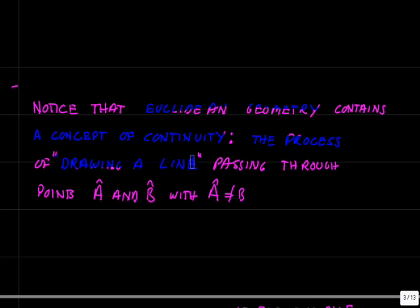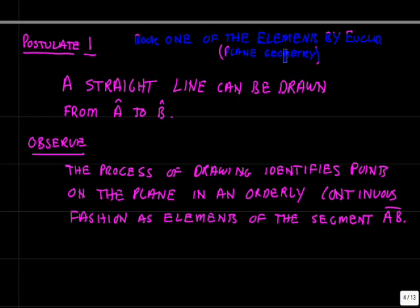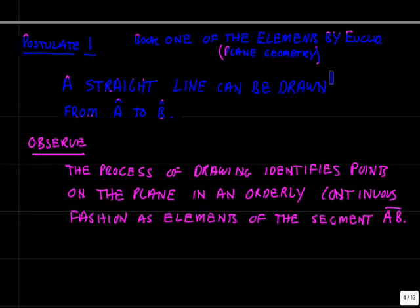The process of drawing a line, passing through two points A and B, two distinct points in the plane, contains the idea of continuity. Look at how this is formulated. In book one of the elements by Euclid, this is part of the treatment of plane geometry. Postulate one, book one, a straight line can be drawn from A to B.